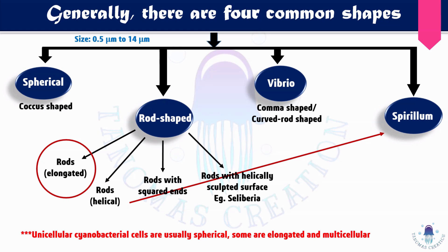Helical rods are sometimes compared to spirillum — spirillum is filamentous, and when helical rods are elongated they also look filamentous, so helical rods are sometimes also called spirillum. Unicellular cyanobacterial cells are usually spherical, some are elongated, and some are multicellular. Cyanobacteria is an algae and will be covered in another video.